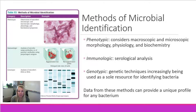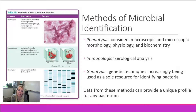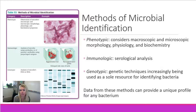These three methods are usually used in conjunction with each other. Starting with phenotypic is typically the first basic testing done, and then you can move on to immunologic or genotypic as well. Together, these three methods can provide a unique profile for any bacteria, virus, fungus, or parasite — really any microorganism can be identified using one or a combination of these three types of testing.